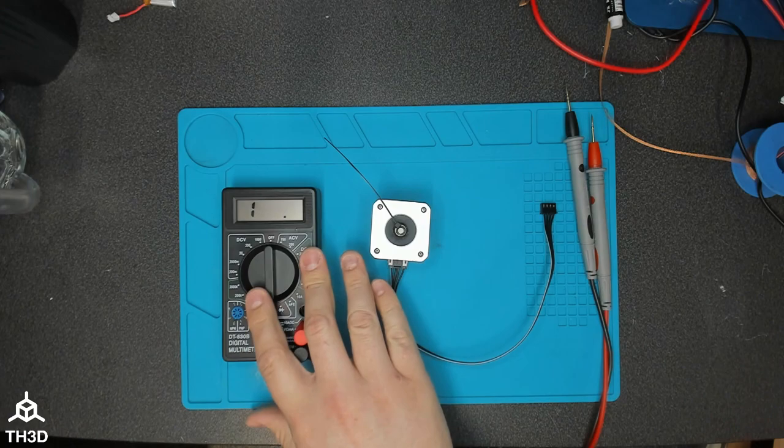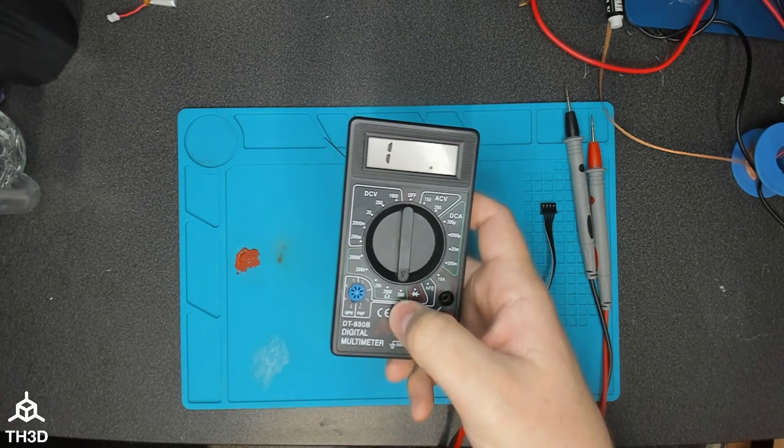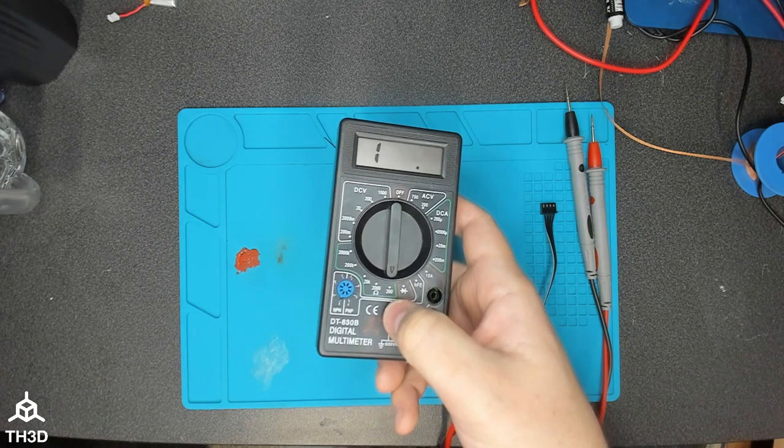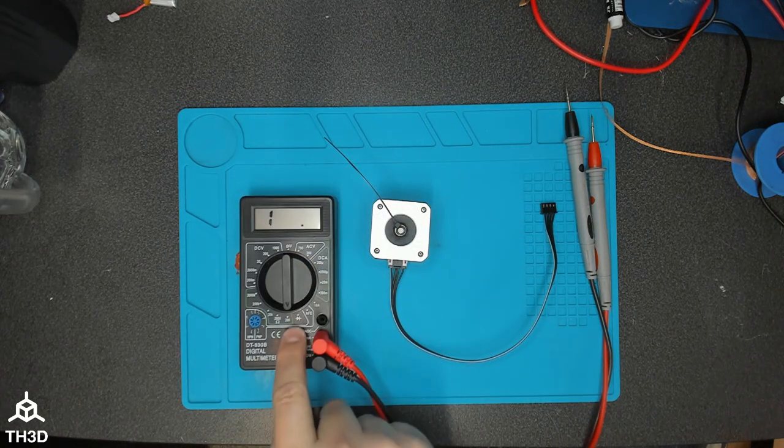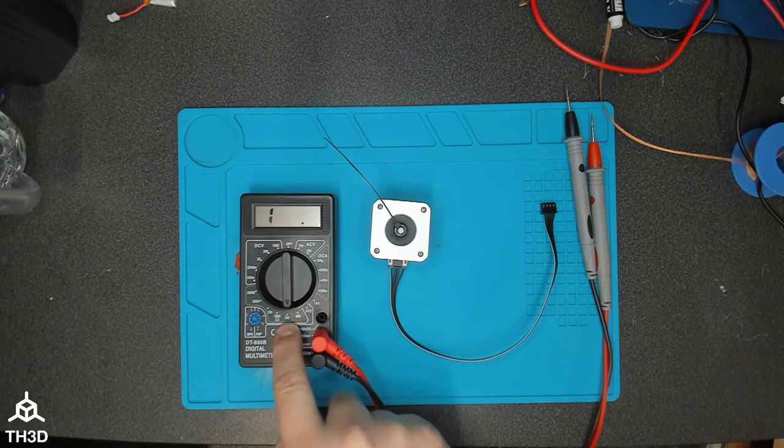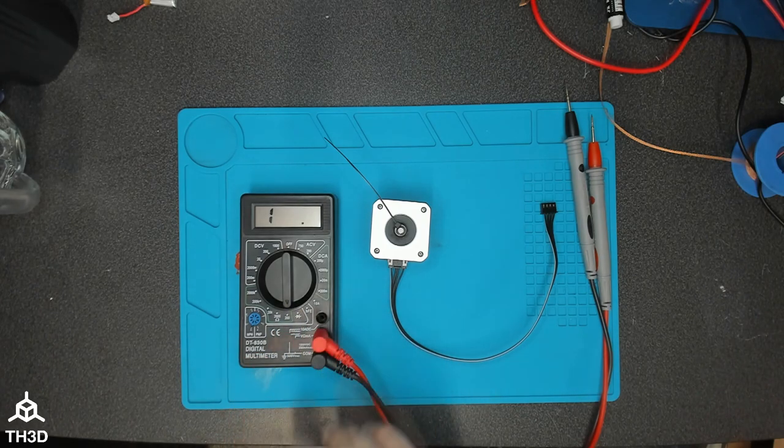You just need a cheap multimeter and need to have it set on to the ohms section. The lowest this one goes is 200 ohms, so that's what I have this set on. You want to have it on a minimum of 20 ohms. Some multimeters do go down to 20 ohms, so if yours is 20 ohms I'd recommend setting it to that. Most stepper motors coil resistances are under 20 ohms.